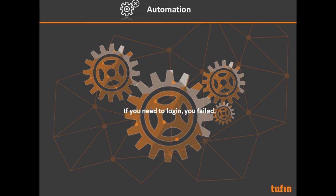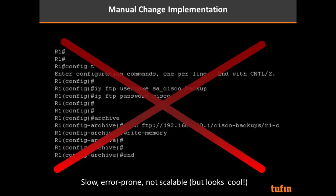Automation is another key tenet. From our perspective, if you need to log in manually to make a change, you've failed. Manual change implementation — which many of you have done — is slow, error-prone, and not scalable. It may look impressive, but in reality you can make a lot of mistakes and it simply doesn't scale.